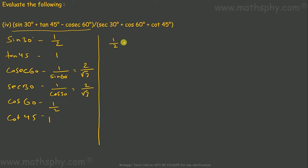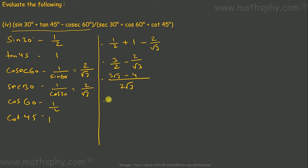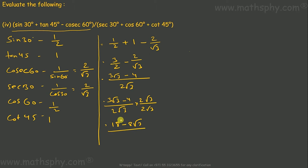For the numerator: sin 30 plus tan 45 minus cosec 60 equals 1 over 2 plus 1 minus 2 over root 3. This gives 3 over 2 minus 2 over root 3. Rationalizing: 3 root 3 minus 4 over 2 root 3, then multiplying by 2 root 3 over 2 root 3 gives 18 minus 8 root 3 over 12. Taking 2 as common: 9 minus 4 root 3 over 6.